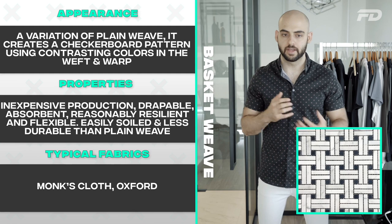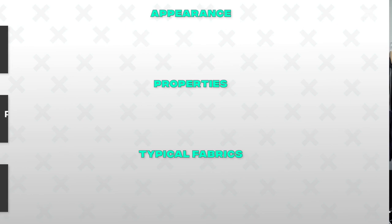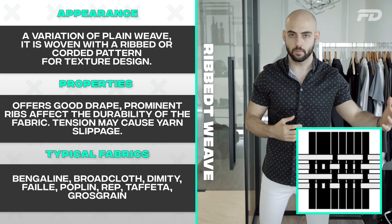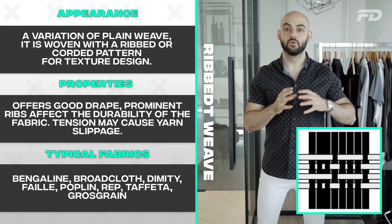Common basket weave fabrics seen in everyday use are monk's cloth and oxford. Next up is the ribbed weave. The ribbed weave is a variation of the plain weave where the wales or cords are created using a distinct yarn. This is what gives the ribbed weave its rib-like structure, and these yarns can either be substituted in for the warp or the weft — otherwise known as the filling yarns.